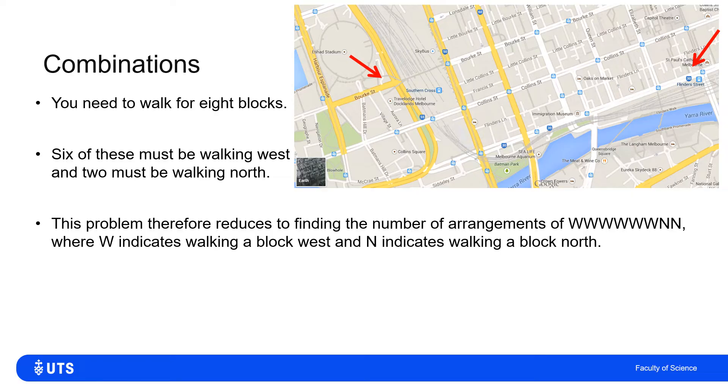So this is just the same as finding the number of arrangements of going west six times and north twice. But how many times can I arrange that? Maybe the first two things I do are walk two blocks north, then six blocks west. Or maybe I go six blocks west, two blocks north, or maybe I go three west, one north, three west, one north. If I figure this out,